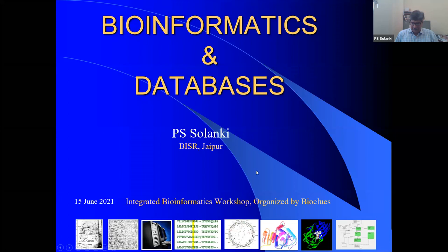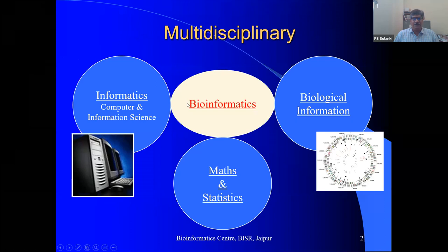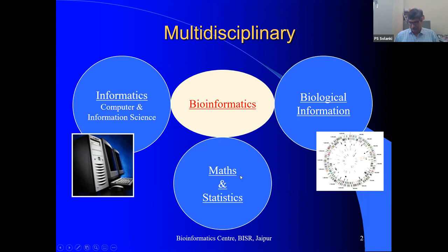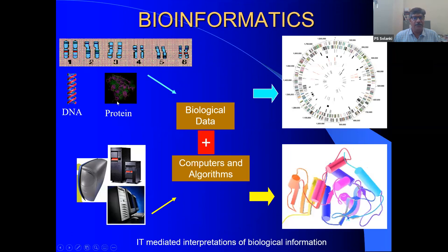Bioinformatics is basically the amalgamation of three different disciplines: informatics, mathematics/statistics, and biological information. You have biological data as input, put your information into computers, use computer science, develop mathematics and statistics, and develop algorithms to perform the analysis. It's a multidisciplinary subject where we collect biological information from chromosomes and proteins and put it into computers.